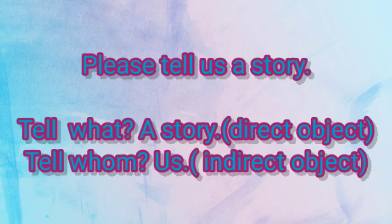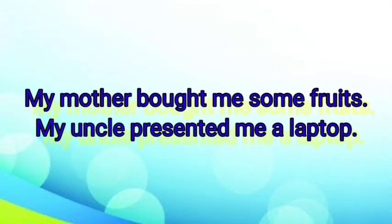More examples with two objects: 'Please tell us a story' — tell what? A story (direct object). Tell whom? To us (indirect object). 'My mother bought me some fruits' — bought what? Some fruits (direct object). Bought for whom? For me (indirect object). 'My uncle presented me a laptop' — presented what? A laptop (direct object). Presented to whom? To me (indirect object).